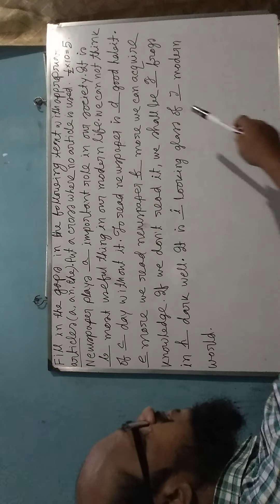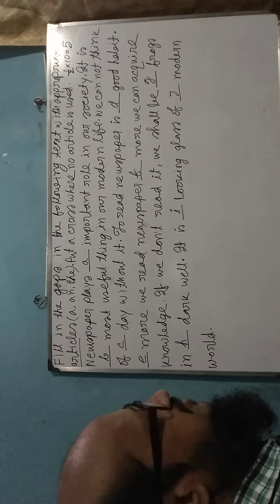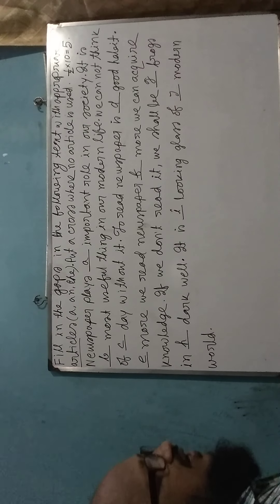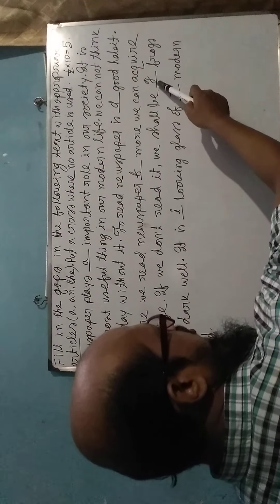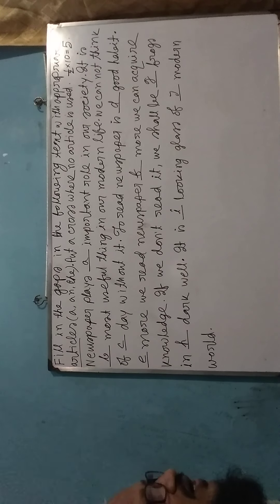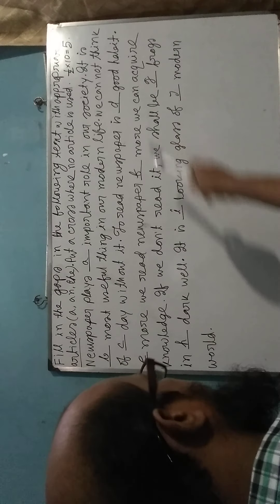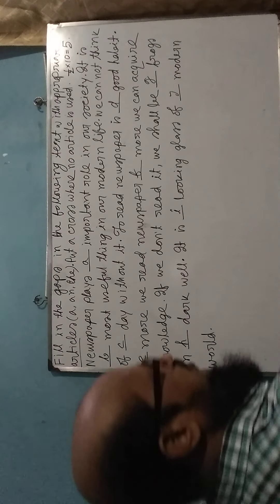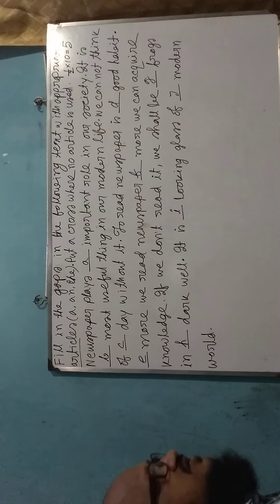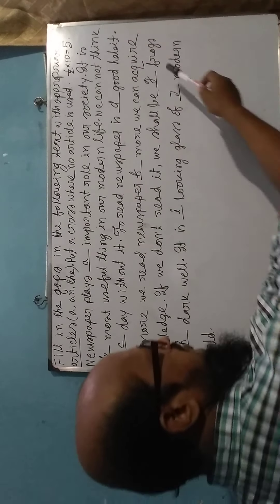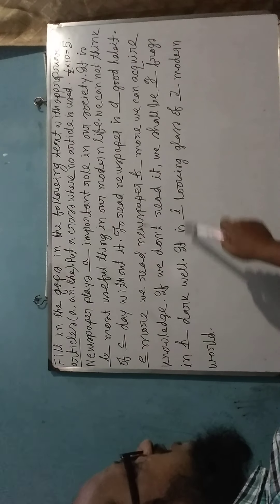'If we don't read it, we shall be [blank] frogs in [blank] dark well.' This is a set phrase — a phrasal idiom. Phrasal idioms contain fixed articles, and you have to memorize important phrasal idioms so that you can put the correct article. According to this idiom, before 'frogs' we use 'The,' and before 'dark' we use 'A.' So: 'We shall be the frogs in a dark well.'